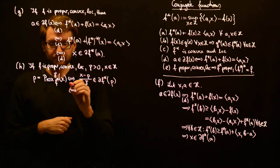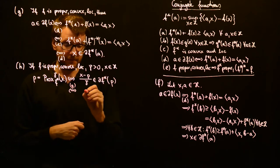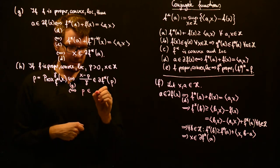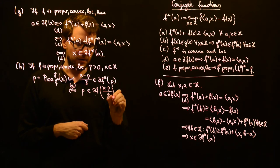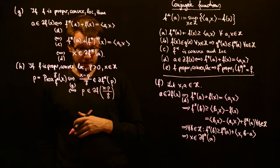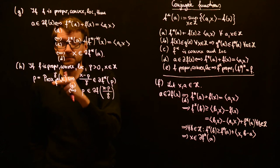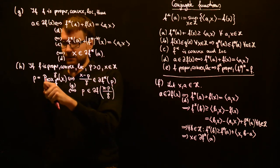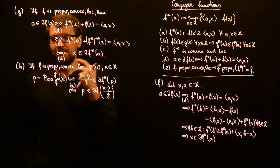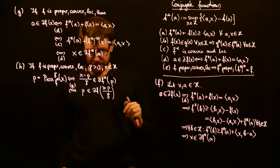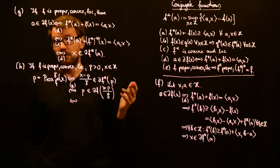We have seen in property G that we can reverse this, and this is still an equivalence. So p is in the sub-differential of f at the point x minus p over gamma. Now, having a sub-gradient is always equivalent with having a proximal point, but we want an alternative expression for the point p — we want to possibly eliminate p from the argument of the proximal point of f.